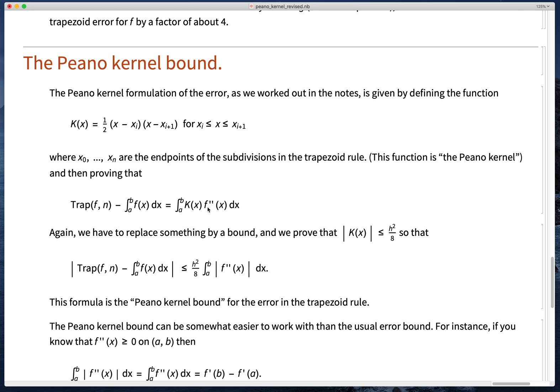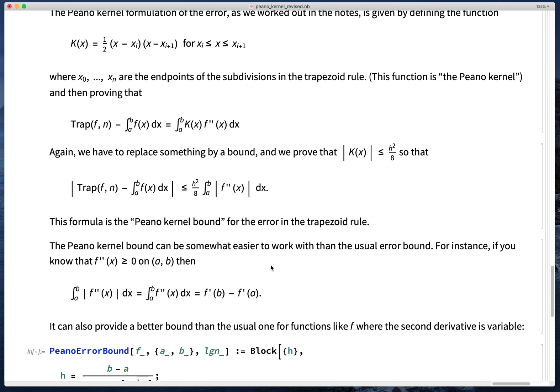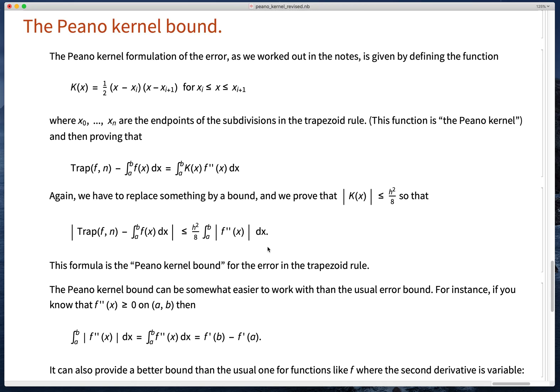This would be the Peano kernel formula for the error. So why would you use the Peano kernel rather than the traditional formula? Well, for one thing, it's often hard to bound f''. So if you know that f'' is always positive, or always negative, you can drop the absolute values and replace this integral with the integral of f''. But the integral of f'' is just the difference of the values of f' at the two endpoints. So this gives you something to put in on the right hand side of the bound which doesn't require you to do an optimization problem.